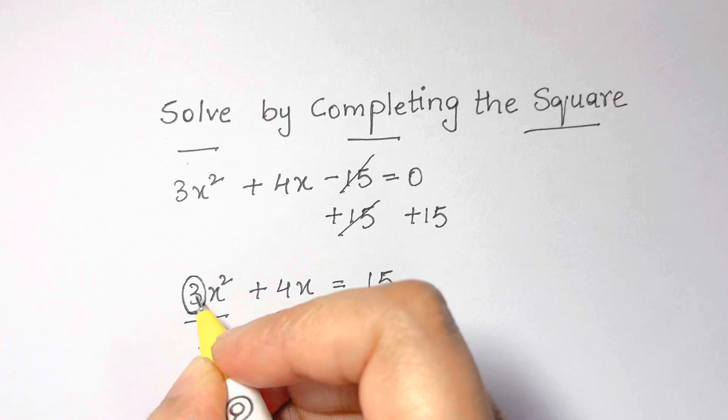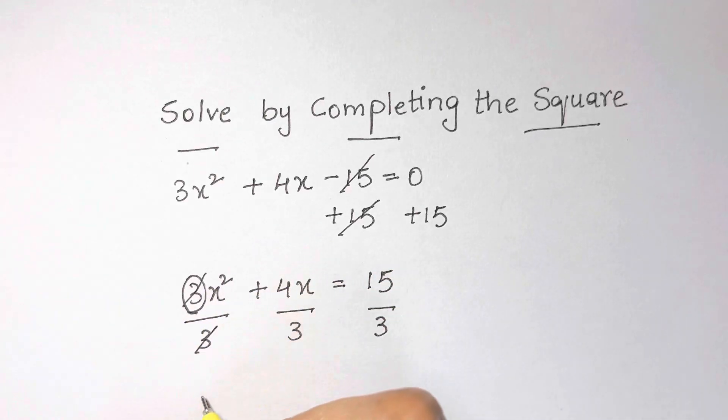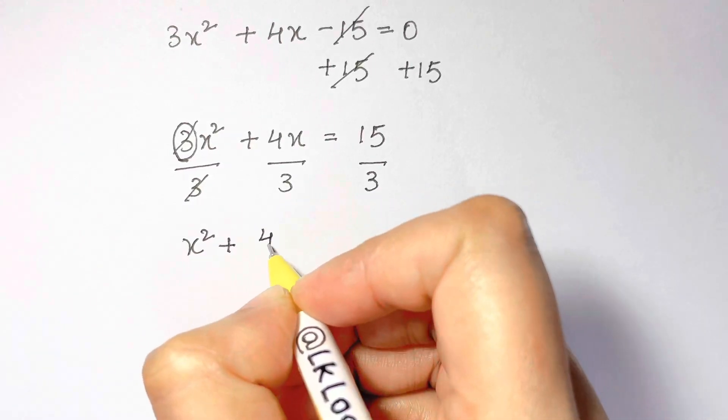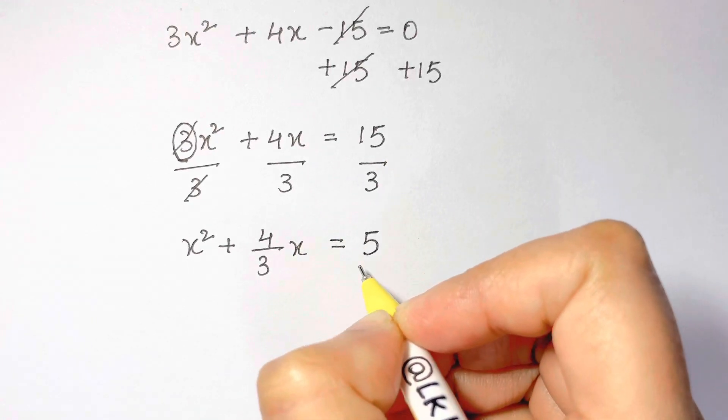That means this 3 and 3 cancels out, so we get x² + 4/3x = 5. 15 divided by 3 is 5.